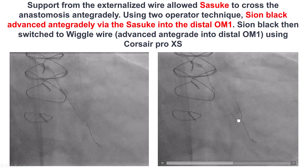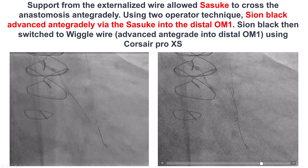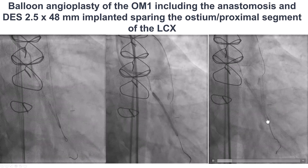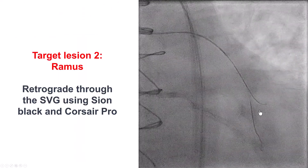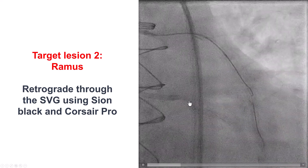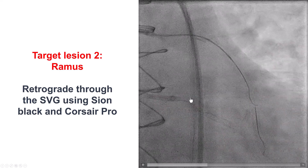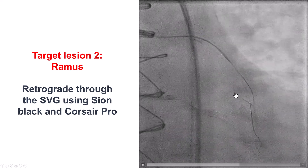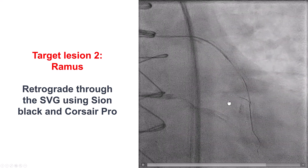That was an interesting approach — first retrograde and then antegrade with a dual-lumen microcatheter to wire into the distal vessel. We ballooned the obtuse marginal branch; crossing through the anastomosis area was not easy but was achieved after multiple predilations. We then placed a stent, but before stenting into the left main, we wanted to first recanalize the RAMUS CTO, because there was a bifurcation at the proximal cap of both CTOs. As planned, we started with a primary retrograde approach.